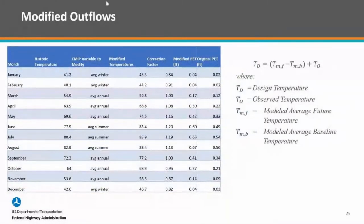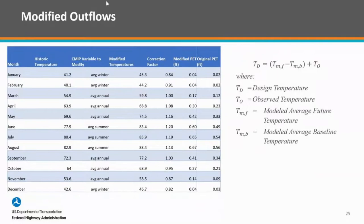Now let's look at modifying outflows — this was my little experiment with the temperature data. I looked at evaporation, using a basic empirical equation for evaporation based on average monthly temperatures. The tool doesn't give you average monthly temperatures directly, so I used the best available information: average winter temperature for winter months, average summer temperature for summer months, and average annual for spring and fall. That's the best available in the CMIP tool. Based on that, I figure out what the future temperature is compared to the past, then modify my recorded temperature for that month.